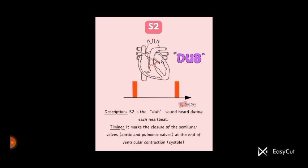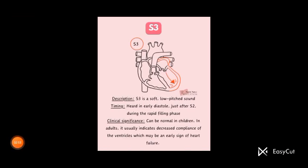This is what is happening at the end of ventricular systole, which is caused by the aortic and pulmonary valves. Timing: the lub-dub sound marks the closure of semilunar valves, which are our aortic and pulmonary valves, at the end of ventricular contraction.